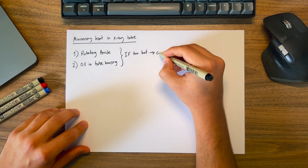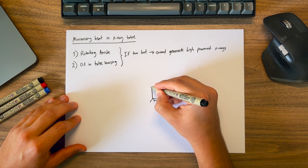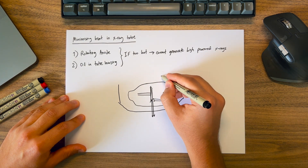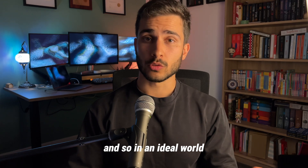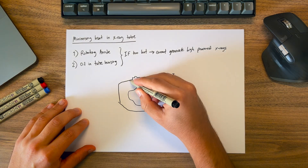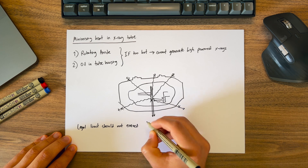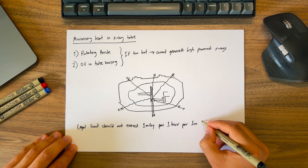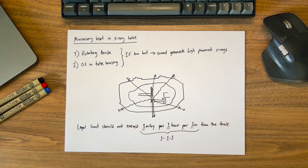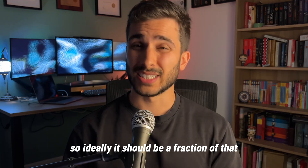If the heat is too high, we can't generate those high powered x-rays that we need to penetrate our patient's tissues. The tube housing has another function, and that is to act as a lead shield, absorbing the x-rays going in all other directions — we're only interested in the x-rays coming out of the exiting window. In an ideal world there are no x-rays leaking from the x-ray tube, but there are going to be x-rays that scatter in other directions, which is what the metal housing is trying to prevent. The legal limit of radiation leakage from an x-ray tube running at its maximum voltage should not exceed 1 mGy per hour at 1 meter from the anode — so 1-1-1: 1 mGy, 1 hour, 1 meter. Ideally it should be a fraction of that.